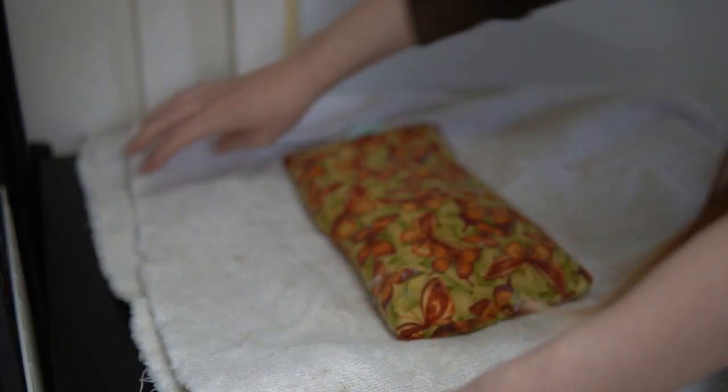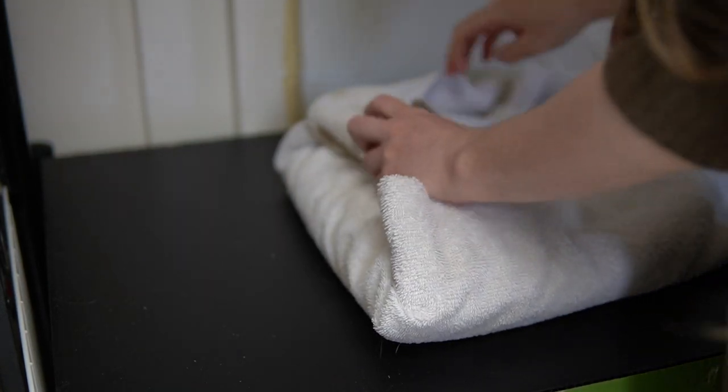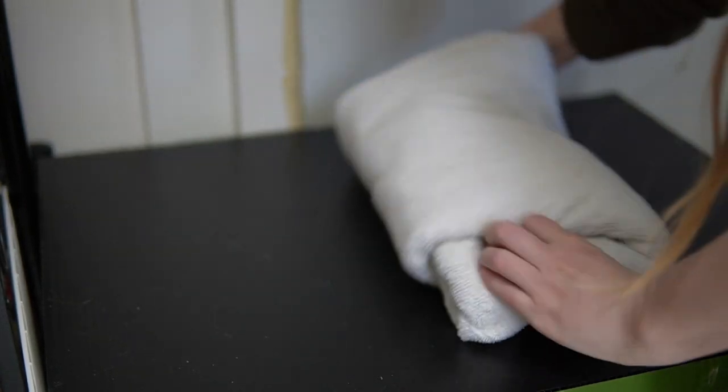When giving a rabbit the heating pad, you don't want to put the heating pad directly next to them. You do want to wrap it in a towel first, so keeping a couple towels on hand and in the vicinity of your first aid kit can also be important and very useful because you don't want to have the heating pad directly next to your rabbit because you don't want to risk burning them. So putting it in a towel and then next to your rabbit is usually the way to go.